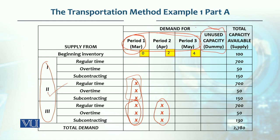Dummy variable — हम इसलिए use करते हैं क्योंकि transportation method में demand और supply बराबर होनी चाहिए। उसकी cost zero होगी क्योंकि dummy है, it's not real। Regular production की cost $40 है first period में। अगर first period में produce करके second period में use करें तो $42, और third period में utilize करें तो $44 होगी।